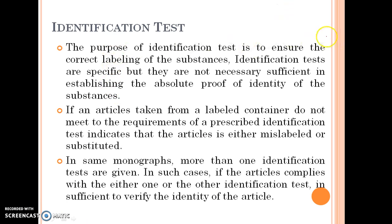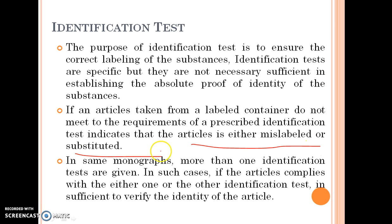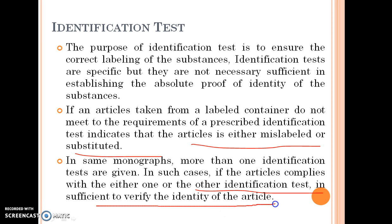The purpose of identification tests is to ensure correct labelling of substances. Identification tests are specific but not necessarily sufficient to establish absolute proof of identity. If an article from a labelled container does not meet the requirements of a prescribed identification test, it indicates that the article is either mislabelled or substituted. In some monographs, more than one identification test is given; compliance with either one is sufficient.